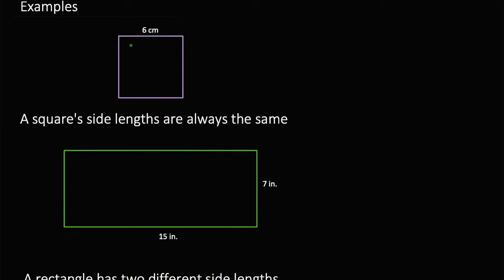We know that the area would be all of the inside, but sometimes we're going to need to find the outside. So how do we do that? For certain shapes, there are certain ways to figure it out. Since this is a square, we know that all the sides are the same, as it says right here — a square's side lengths are always the same.